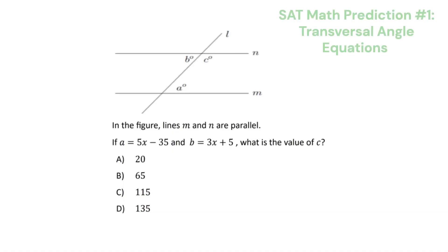Let's kick off our October SAT predictions with a geometry problem. It says in the figure lines m and n are parallel. If a equals 5x minus 35 and b equals 3x plus 5, what is the value of c? So you can see here we have two parallel lines, n and m, and then we have a transversal cutting through it that is line L.